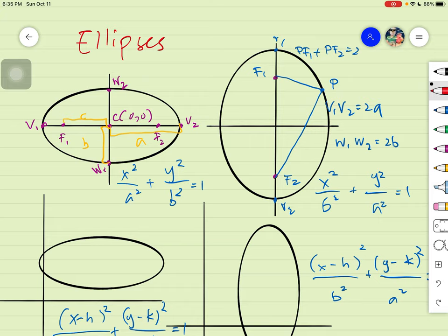So take a note of those followings. Kasi mangyari dyan, we will find the coordinates of our vertices, our co-vertices, and our foci. Depending on the given value, which is of course yung a, b, and c.